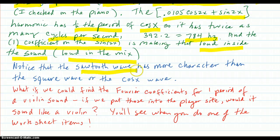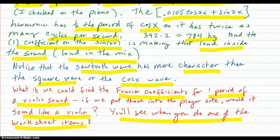Notice that the sawtooth wave has more character in it than the square wave did on another video or the cosine wave did. What if we could find the Fourier coefficients for one period of a violin sound being bowed, and if we put those in the player's sight, would it sound like a violin? Well, we'll find out. But basically a violin is changing in character every moment of time. And we're going to try to capture just one period and cut and paste that. So we'll see. We'll see if it actually sounds like a violin, or maybe close, or who knows.